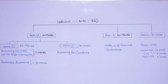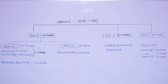Part B weightage is 20 marks. There is one separate book on analysis of financial statements — if we talk about T.S. Grewal. Part C weightage is 20 marks. Part C includes project work which is conducted at school level. It includes a written test with weightage of 12 marks, viva for 4 marks, and project file for 4 marks.